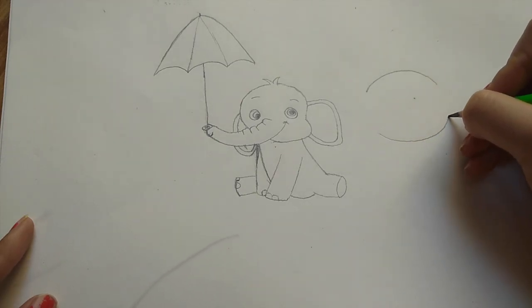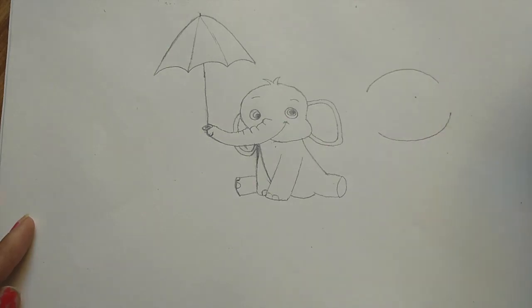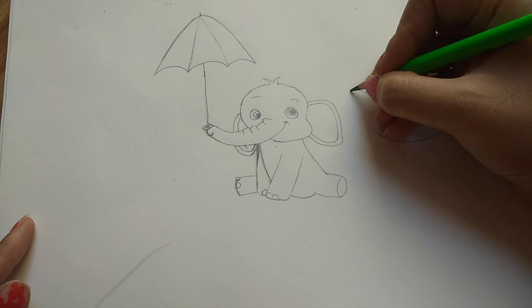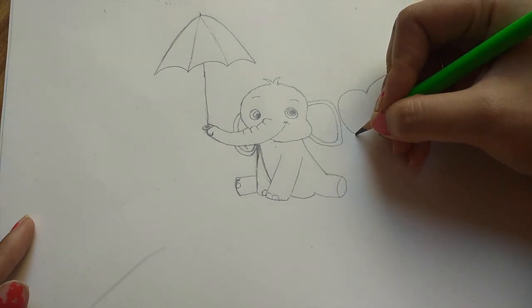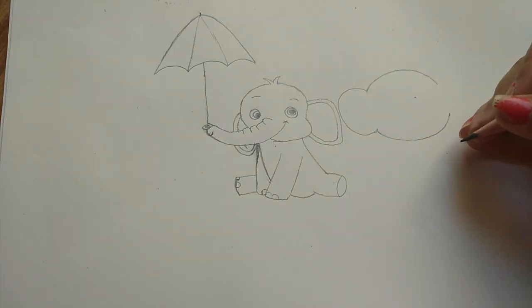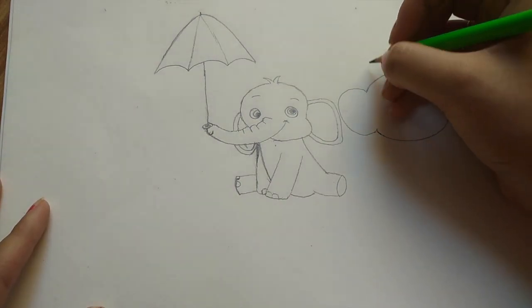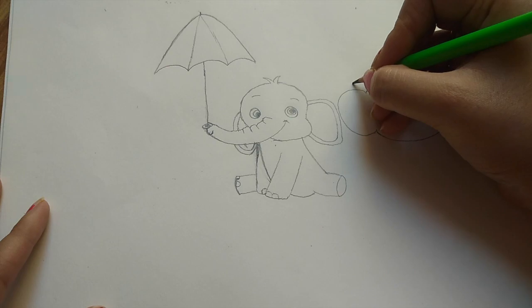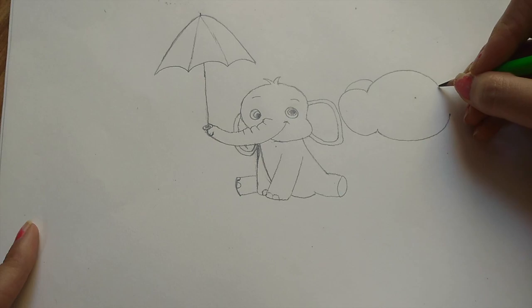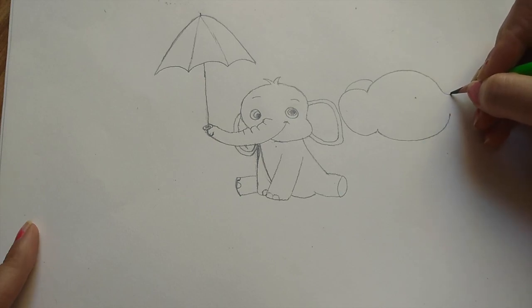Half and half and half, done that. Now draw the ear of the elephant. Draw the second ear of the elephant. Now make the trunk of the elephant.